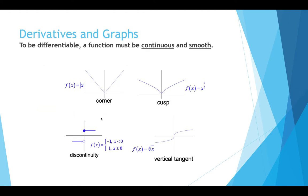In order to be differentiable, a function must be continuous and smooth, so that means derivatives will fail to exist at a corner, at a cusp, at a discontinuity or hole, or at a vertical tangent.